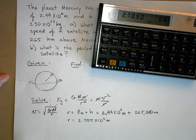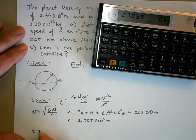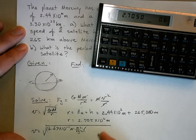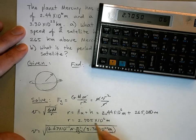Now we can figure out our orbital velocity. That'll be 6.67 times 10 to the negative 11 Newton meters squared per kilogram squared, times the mass which is 3.30 times 10 to the 23 kilograms, over 2.705 times 10 to the 6 meters.